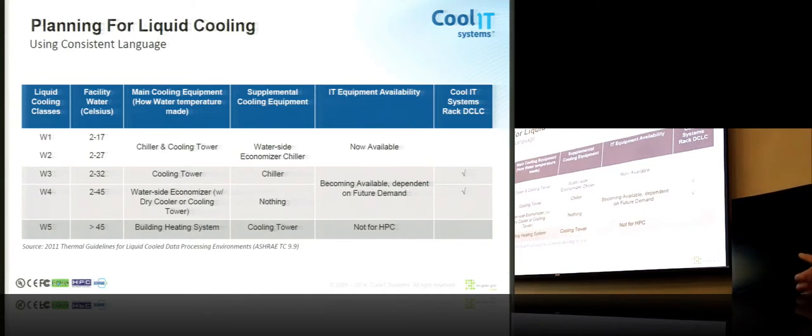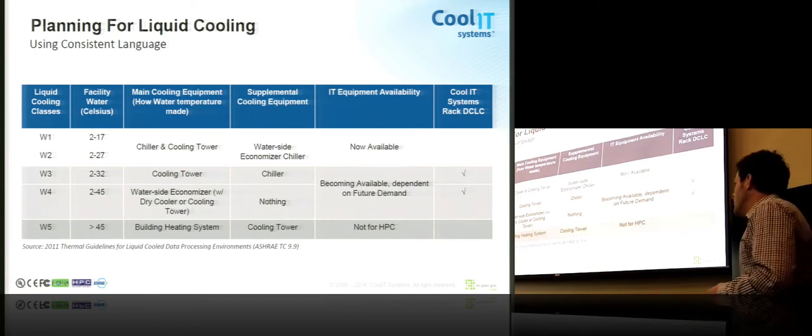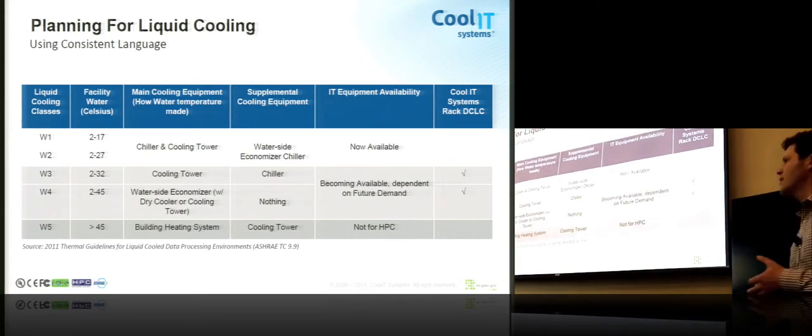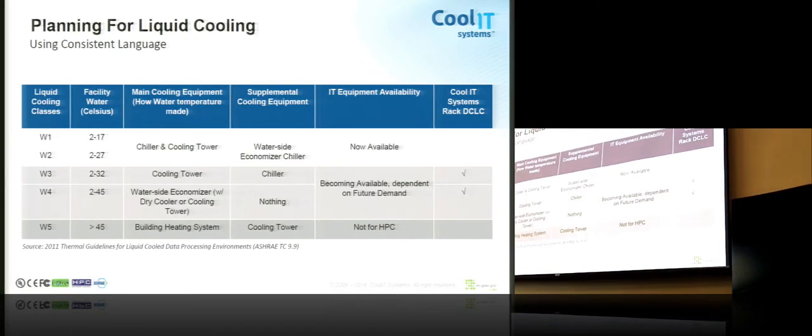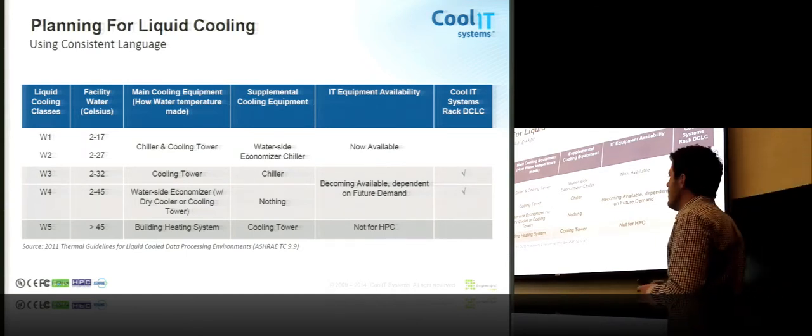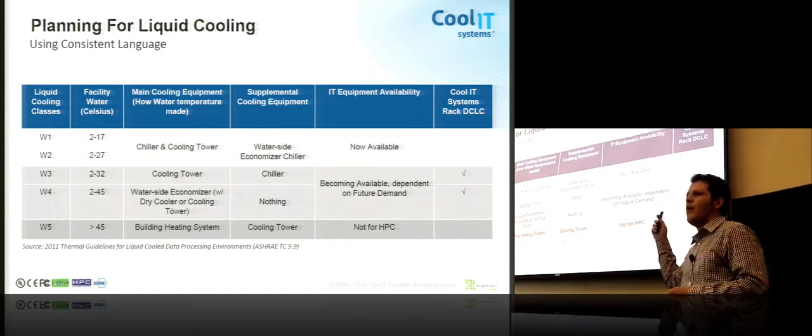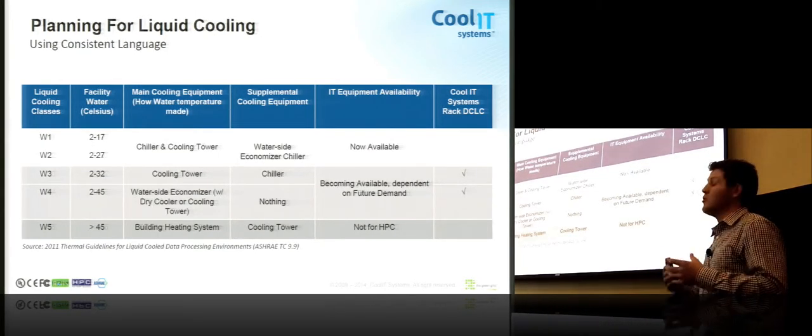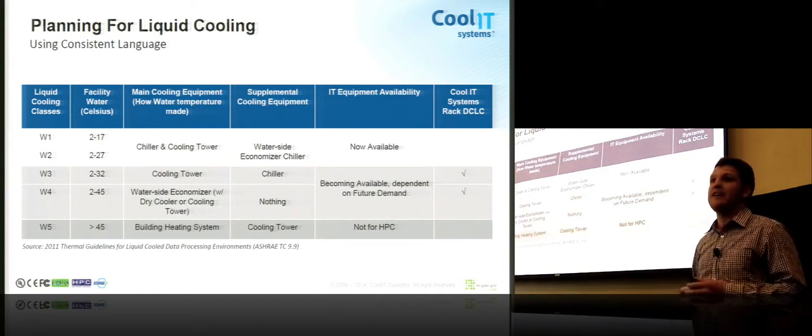For a long time I think we've used W1 water fairly well in the data center. That's chiller based water. W2 water takes it to the next step. It's 27 degrees Celsius water in some environments. NREL for example with their HP Apollo 8000 system can produce W2 water all year round with the dry bulb they have in that climate. Just using a cooling tower which is amazing.